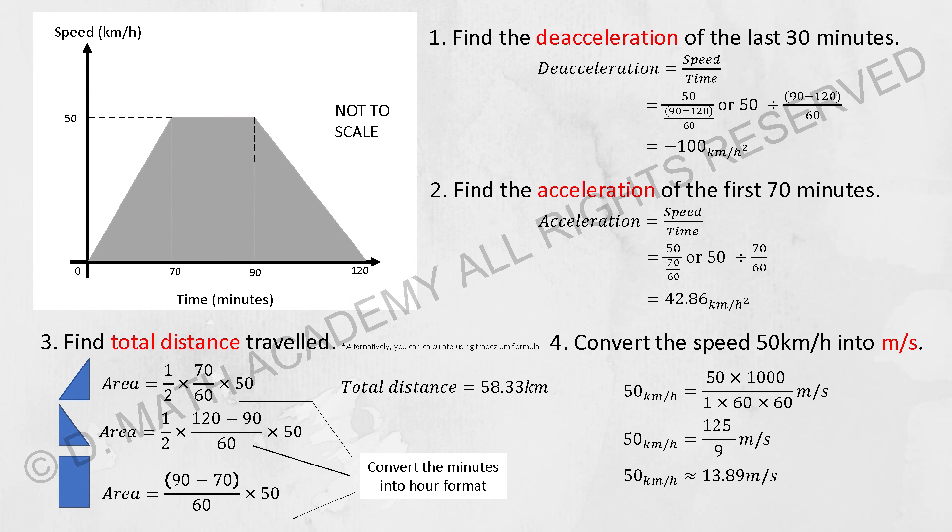Section 4: Convert the speed of 50 kilometers per hour into meters per second. Things to take note: from kilometers to meters, multiply by 1,000. To change one hour into seconds, multiply by 60 to get minutes, then multiply by another 60 for seconds. After the calculation, we should get 13.89 meters per second.